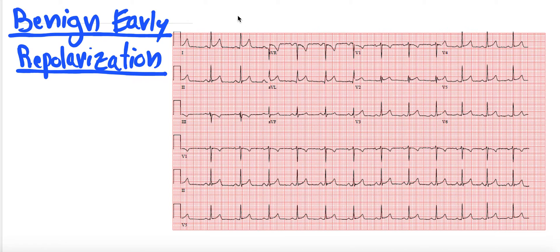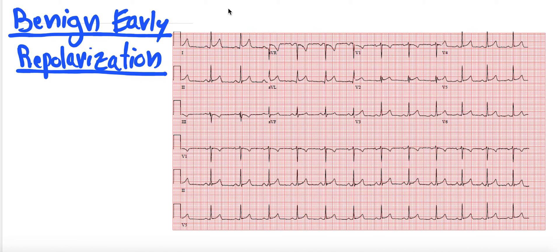So what is it? Benign early repol can often be seen in young, healthy, less than 50-year-olds. The pathophysiology is a little nonspecific — it is essentially a benign difference in the endocardial and subendocardial layers that causes this benign change in repolarization, which can manifest as what looks like ST elevations on EKG.